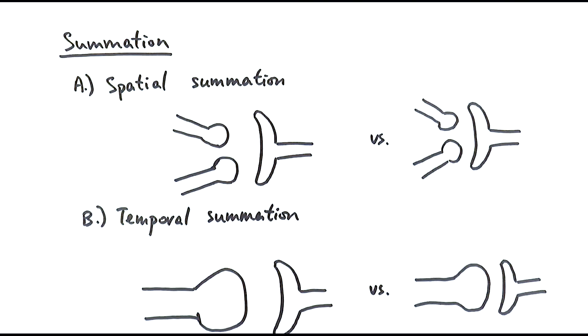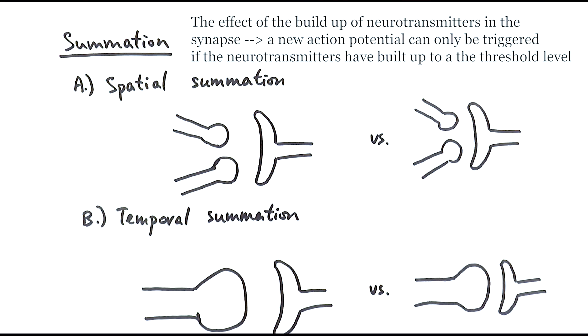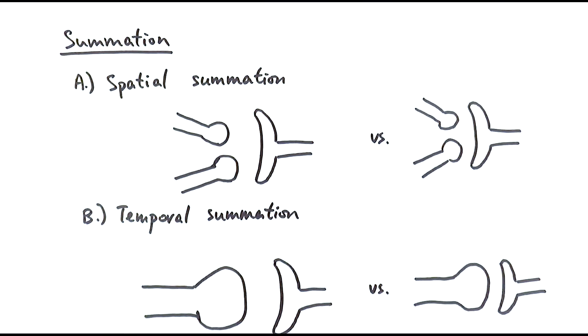Summation is basically a mechanism where they control if a new action potential would be triggered or not, based on the build-up of neurotransmitters in the synapse. Only when they get to a threshold level, that's when the action potential will be generated. Here are two examples to illustrate that.